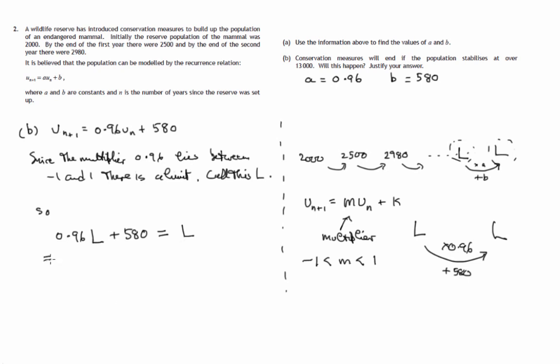So let's subtract 0.96L from both sides. So there's 580 is 1L minus 0.96 lots of L. So that'll give us 0.04 lots of L. So dividing both sides by 0.04 will end up getting the value of L. So L will be 580 divided by 0.04.